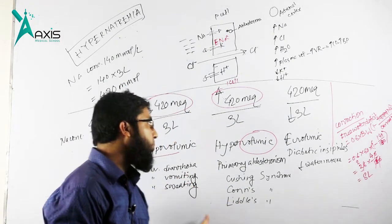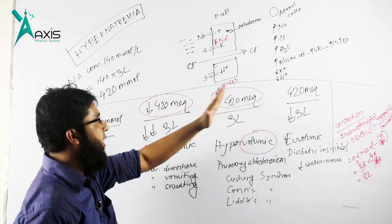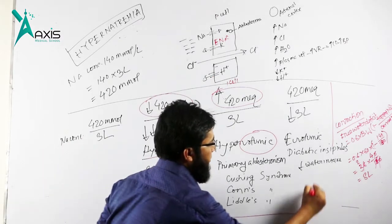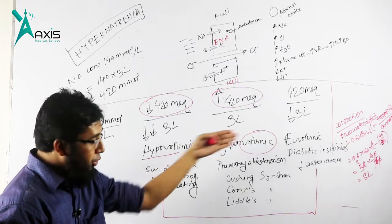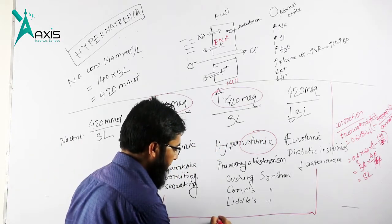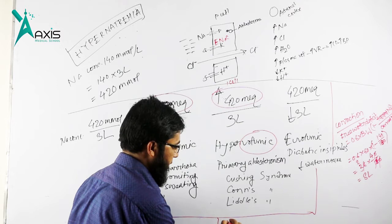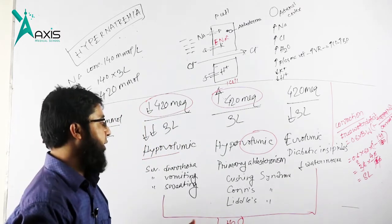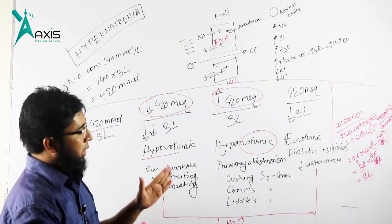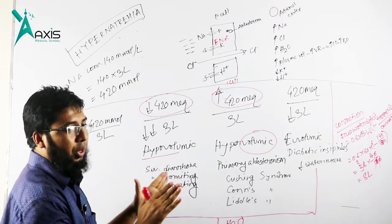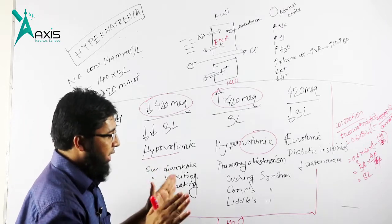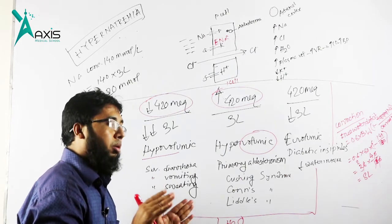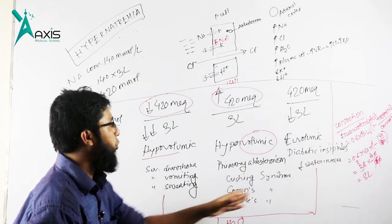So we can see here the absolute sodium gain occurs only in the hypervolemic. In hypovolemic and euvolemic, in these two conditions there is actually loss of water, loss of fluid. So the correction strategy will be we have to add fluid, free fluid, sodium-free fluid in these two conditions.